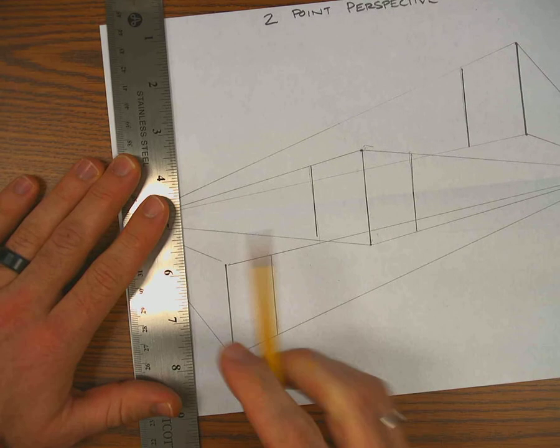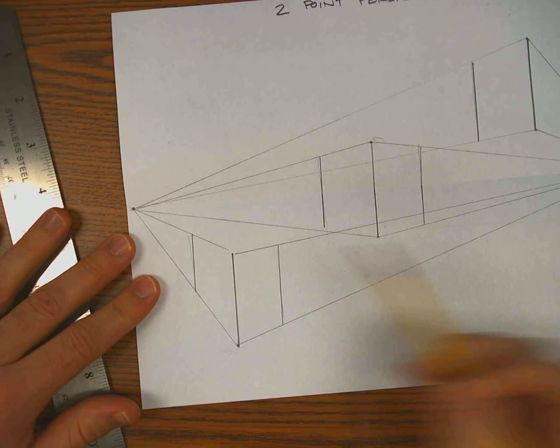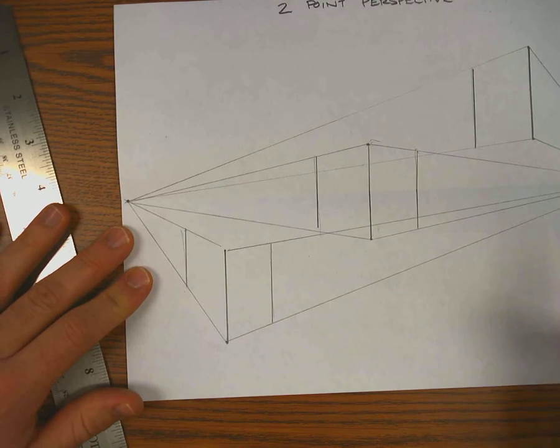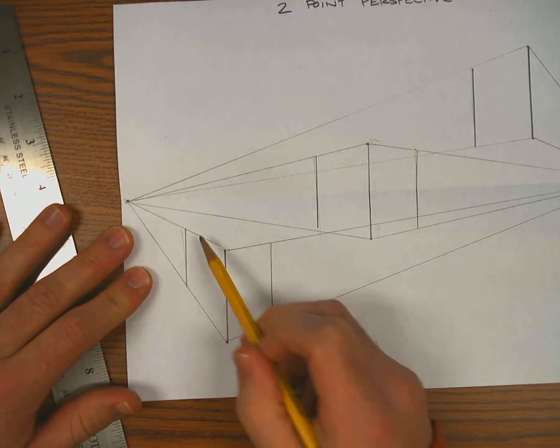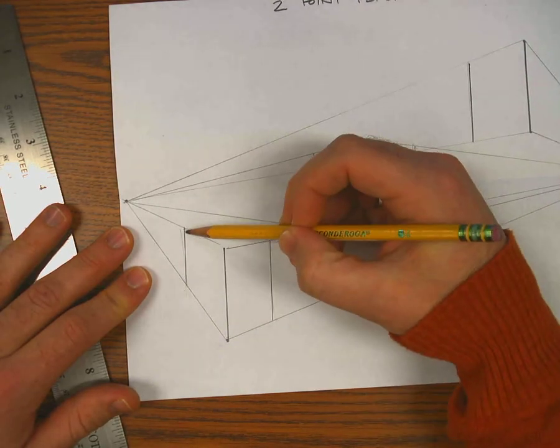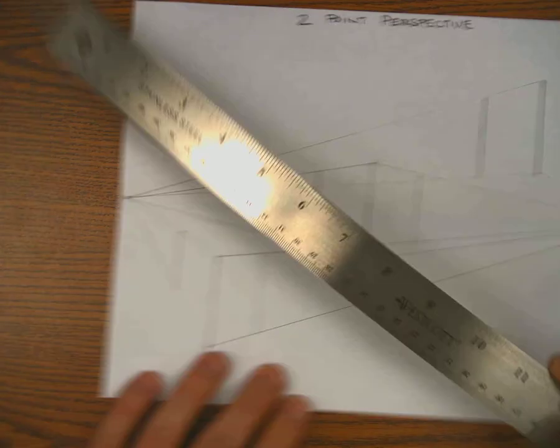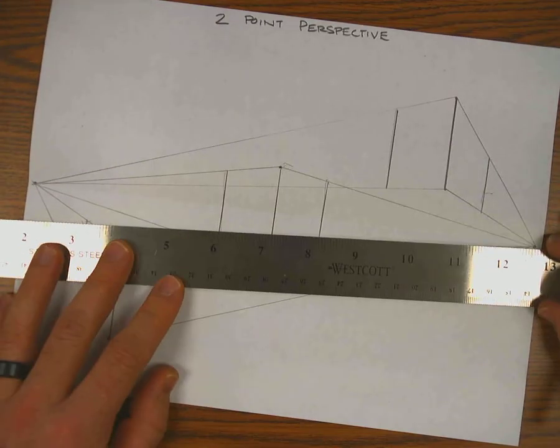And once that is done, I have to follow that same rule. The top and bottom of each one of these vertical lines, I need two lines. One going to the left vanishing point and one to the right. Now all of these lines already have a line going in one direction. From there, it's going to the left. So now I just need to do a line going to the right.